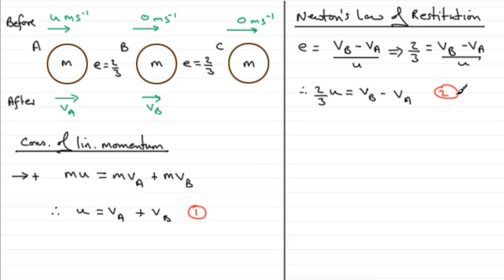There are many ways you can solve simultaneous equations, either by substitution or elimination. In this case I'm going to use elimination. I'm going to do equation one minus equation two. If we do u minus two-thirds u, we're going to have one-third u, and it equals va minus minus va, so two va.